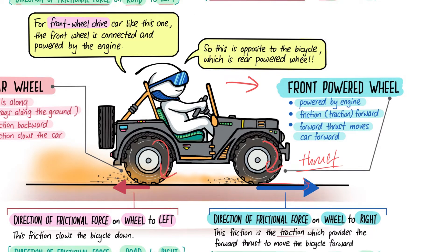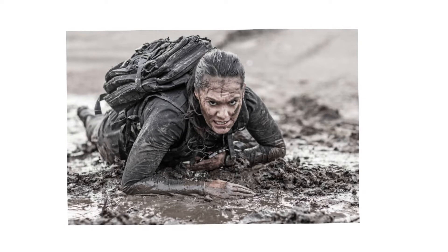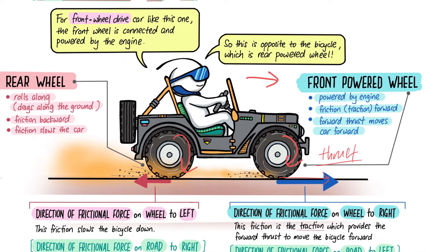For the back wheel, it's not connected to the engine — you're just rolling it along. Going back to the analogy: if your legs aren't pushing and you're just dragging them, the friction there acts like a drag force, slowing you down and making it difficult to move forward. So the frictional force on the rear wheel is to the left. Another way to see it: imagine the rear wheel is a square wheel being dragged — students quickly identify that the drag friction is to the left, while for the front powered wheel the friction is to the right, which is the thrust force.